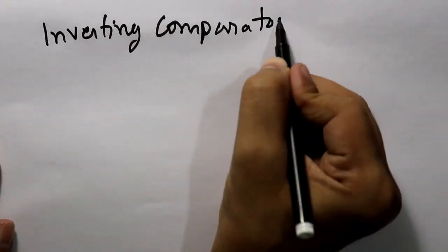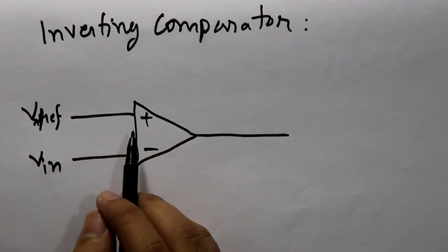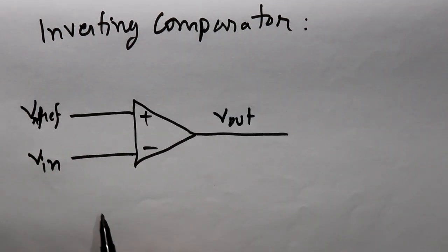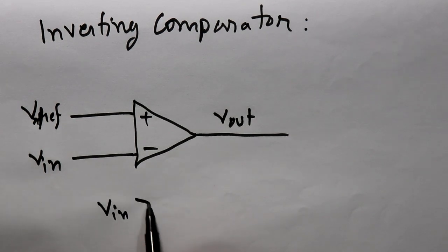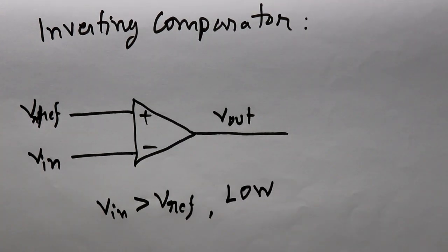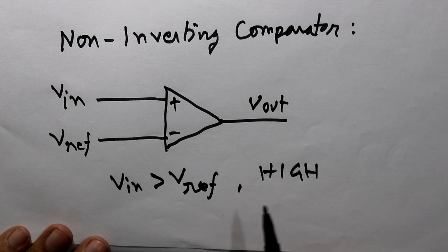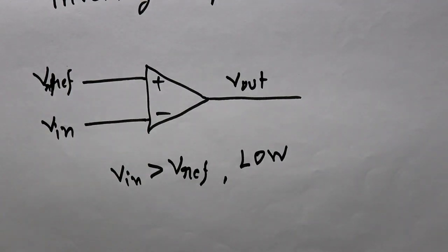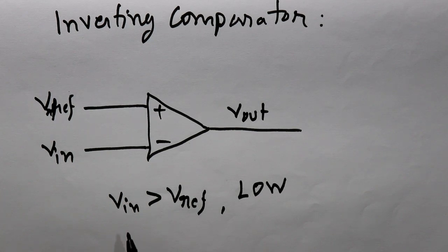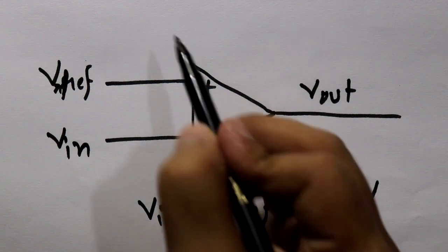In the inverting comparator we will connect the input voltage to the inverting pin and the reference voltage to the non-inverting pin. So whenever the input voltage is higher than the reference voltage, our output will be low. In the non-inverting comparator we saw that whenever the input voltage is higher than the reference voltage the output is high, but in the inverting comparator if the input voltage is higher than the reference voltage the output is low. This is the difference between inverting and non-inverting comparators.